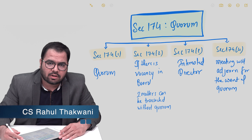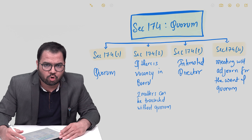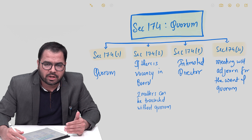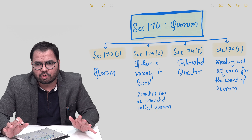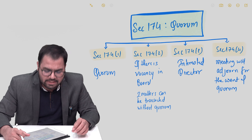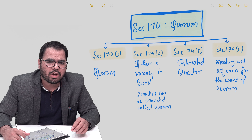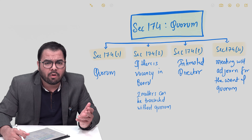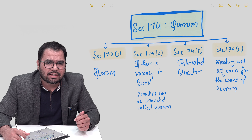Alright guys, let's begin with Section 174, which provides for the quorum. Before we get into the section, let me give you the macro view. Section 174 has four subsections: 174(1), 174(2), 174(3), and 174(4). Let's try and understand what is there in this section.